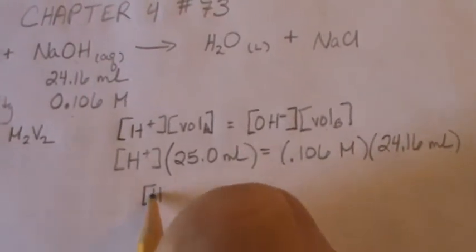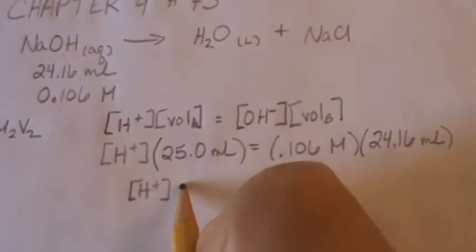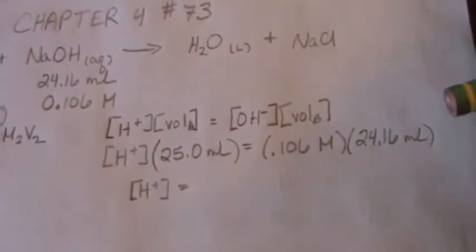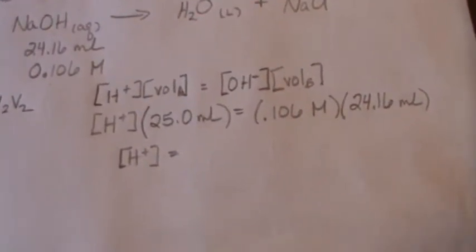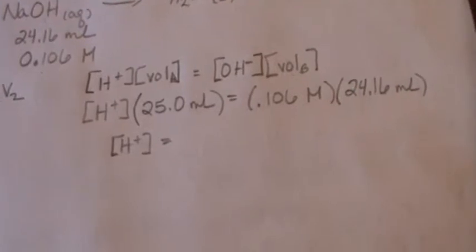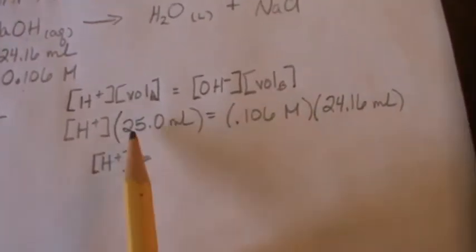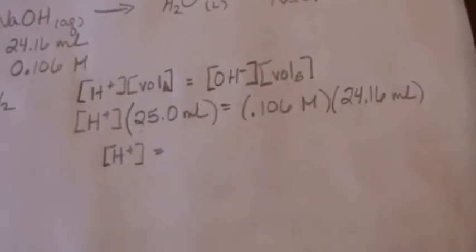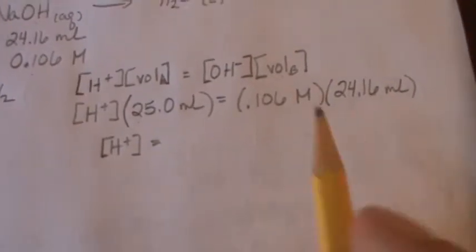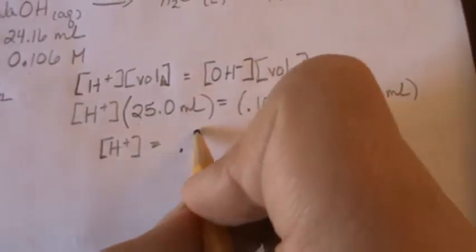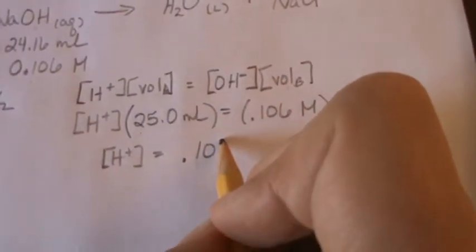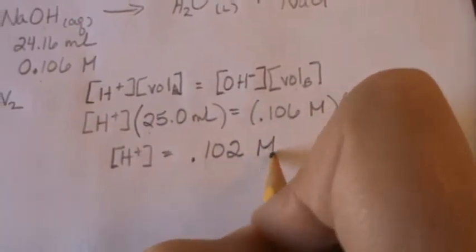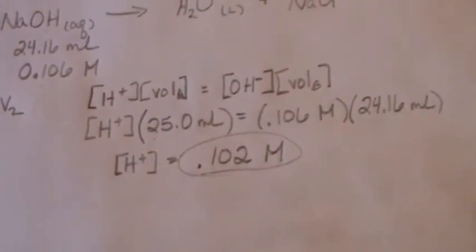And now our H plus concentration, our acid concentration, we find by saying 0.106 times 24.16, and then we divide by the 25, and we get an H plus or an acid concentration, HCl of 0.102 molar.